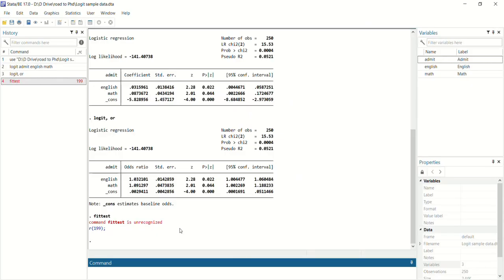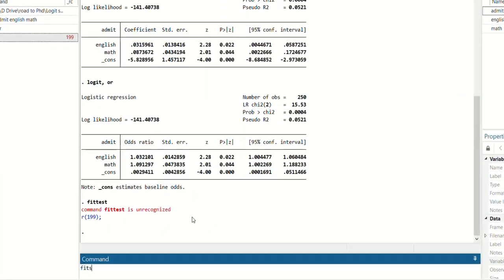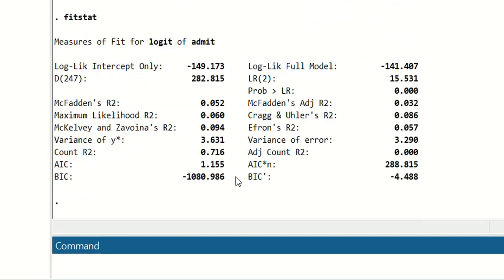You can also run the command to get other stats. For that, we will run this command fitstat, and here we will get the results for some other indicators just like AIC, BIC, and other R-squares. If you want to compare your results with some other R-squares, you can get the results like that with fitstat.